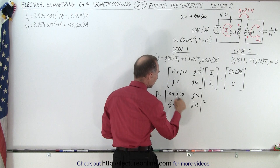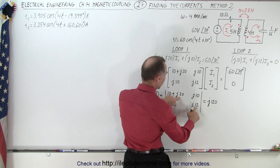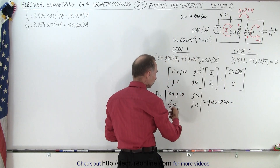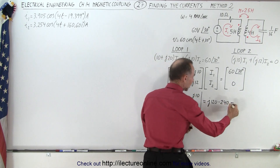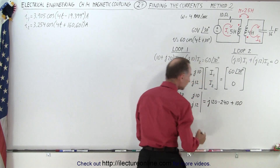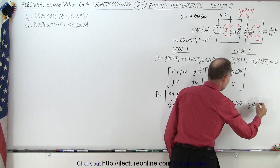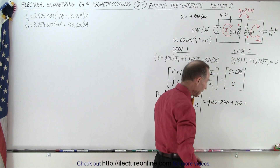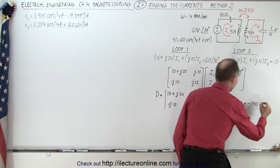This is equal to the product of these two, which would be J120. When we multiply these two — J times J is of course negative one — that would be negative 240. Then subtract the product of J10 times J10: J times J is negative one, 10 times 10 is 100, but because we're subtracting, that becomes plus 100. So when we add these together, this becomes J120.